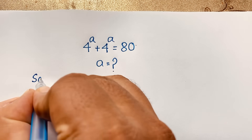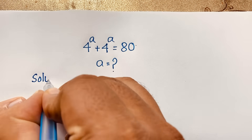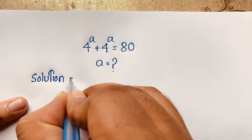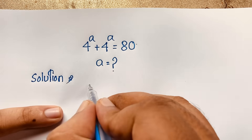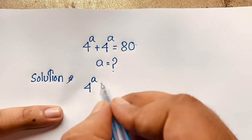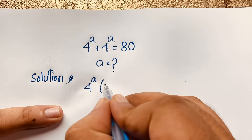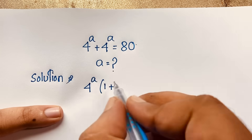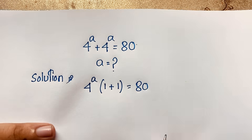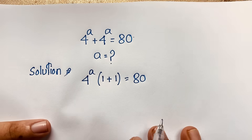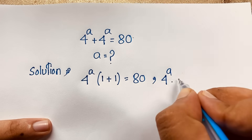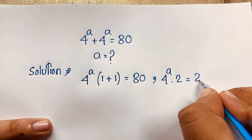I will solve this math question step by step. Here our question is 4 to the power a plus 4 to the power a equals 80. We can factor out 4 to the power a — it is common — so it becomes 4 to the power a times (1 plus 1), which equals 4 to the power a times 2, equal to 80.